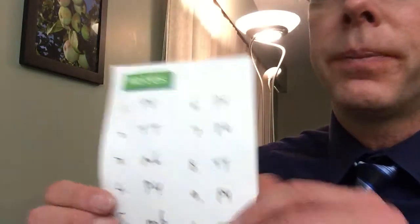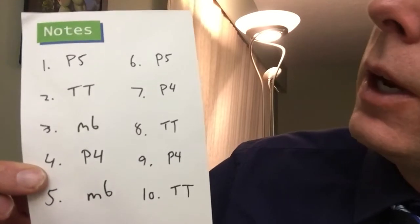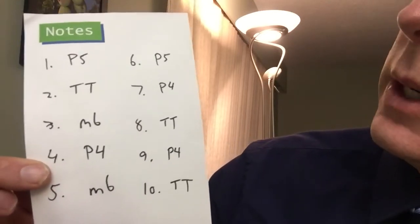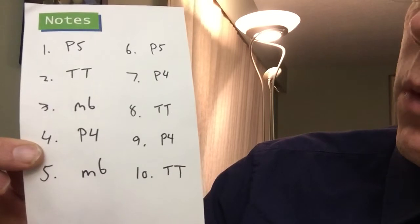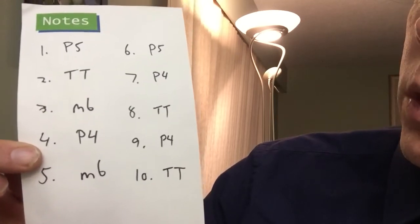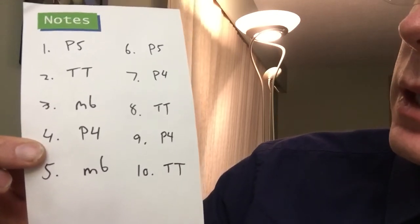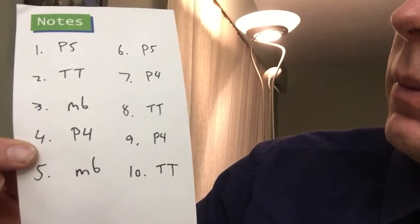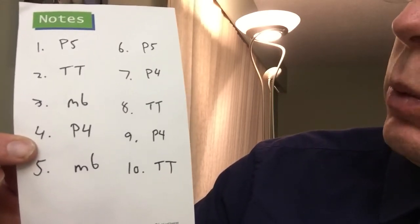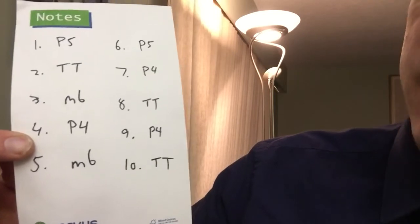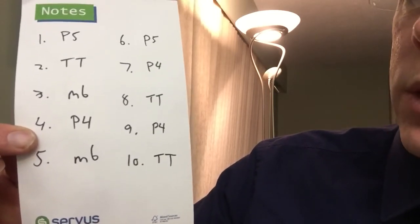All right, let's check the answers. Number one was a perfect fifth, number two was a tritone, number three was a minor sixth, number four was a perfect fourth, number five was also a minor sixth, number six was the perfect fifth, number seven was a perfect fourth, number eight was a tritone, number nine was a perfect fourth, and number ten was a tritone.